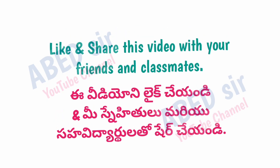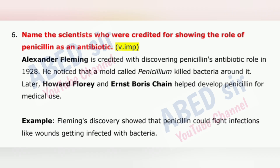Next important question is 6: Name the scientists who were credited for showing the role of penicillin as an antibiotic. Alexander Fleming is credited with discovering penicillin's antibiotic role in 1928. He noticed that a mold called Penicillium killed bacteria around it. Later, Howard Florey and Ernst Boris Chain helped develop penicillin for medical use. Fleming's discovery showed that penicillin could fight infections like wounds getting infected with bacteria.